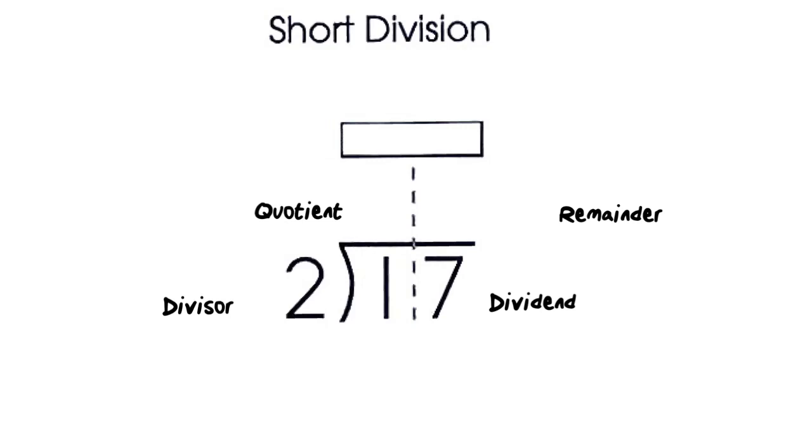Okay, so we're going to divide the dividend, the number 17, by the divisor, which is the number 2. And we're gonna skip count by 2 and draw tally marks up in this rectangular box at the top as we skip count by 2. We want to skip count up into the number 17 without going over. So here we go.